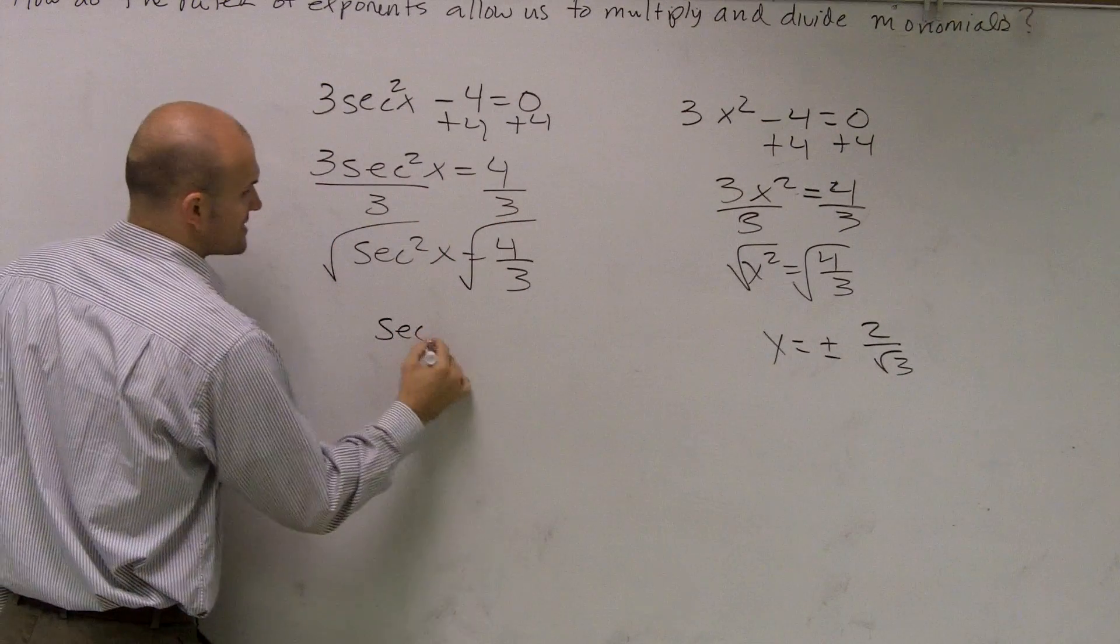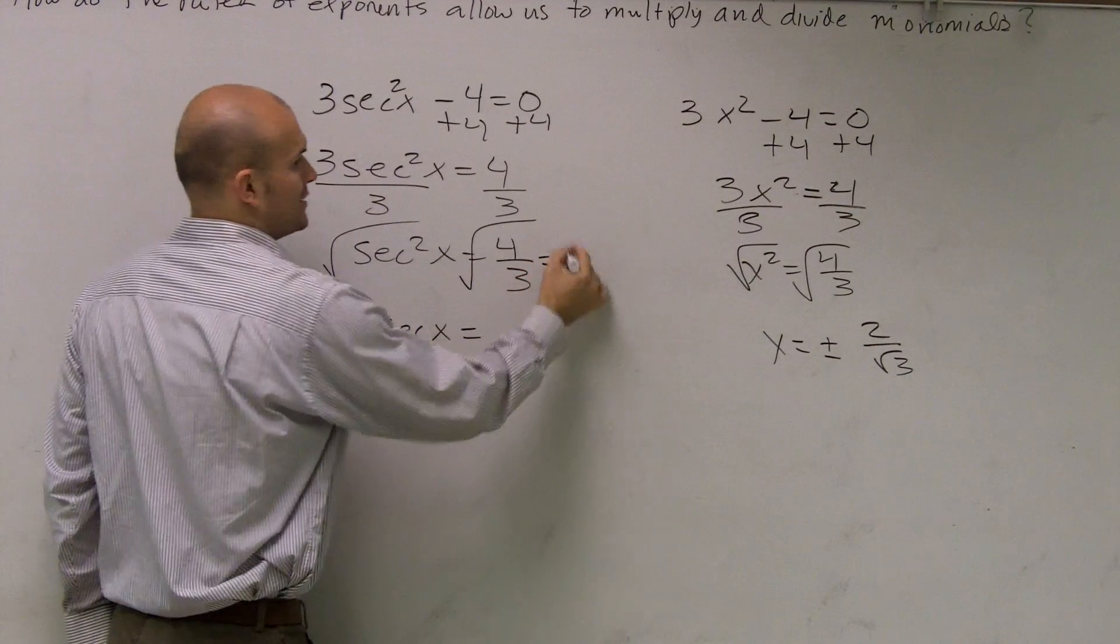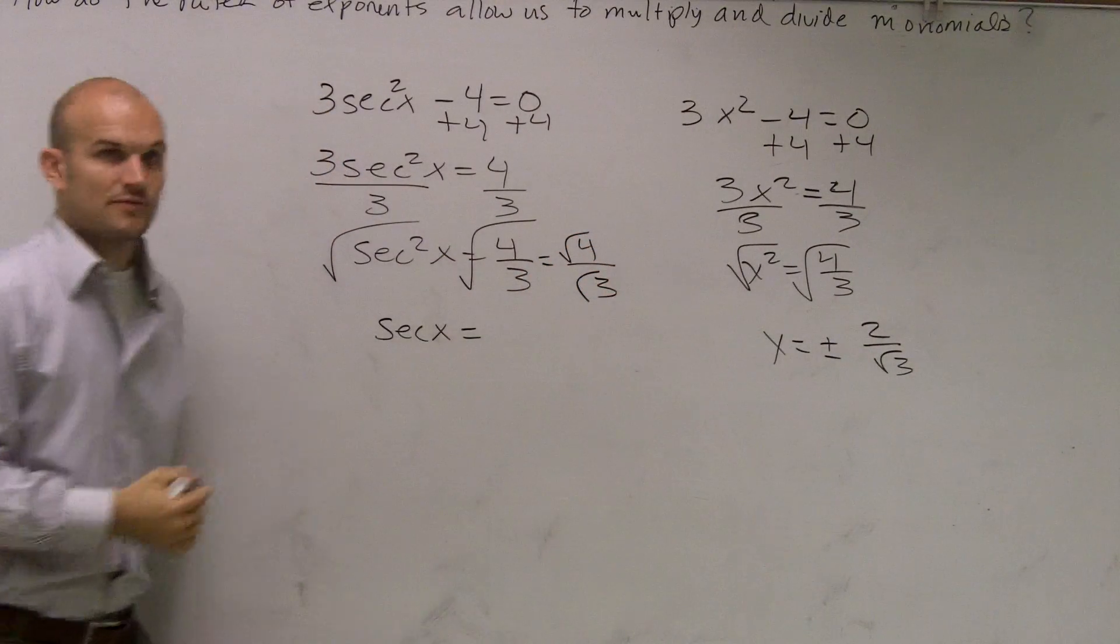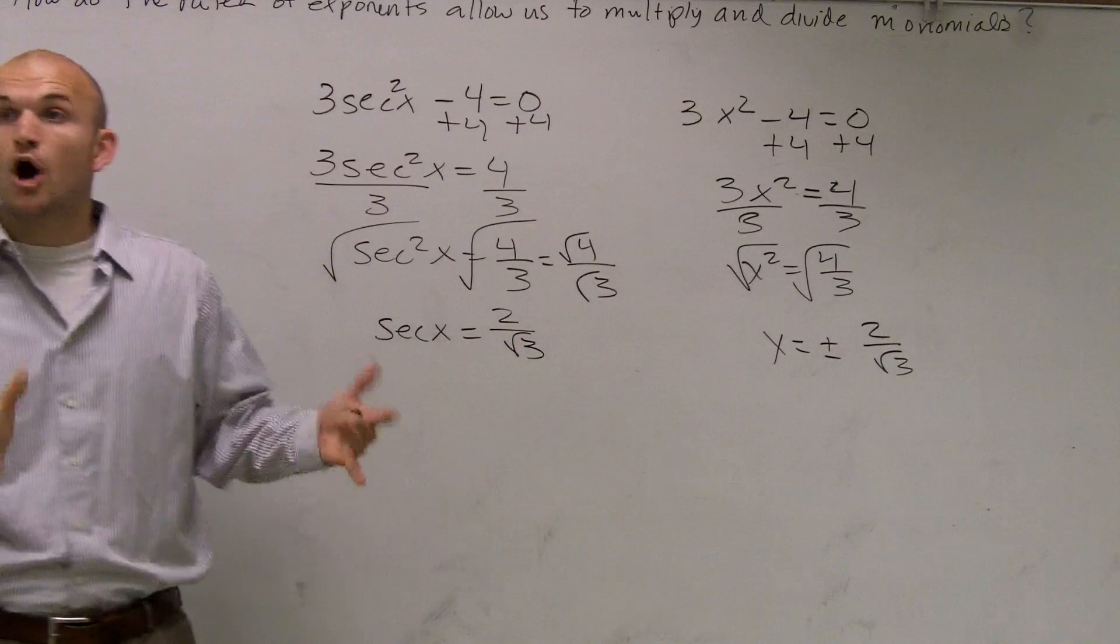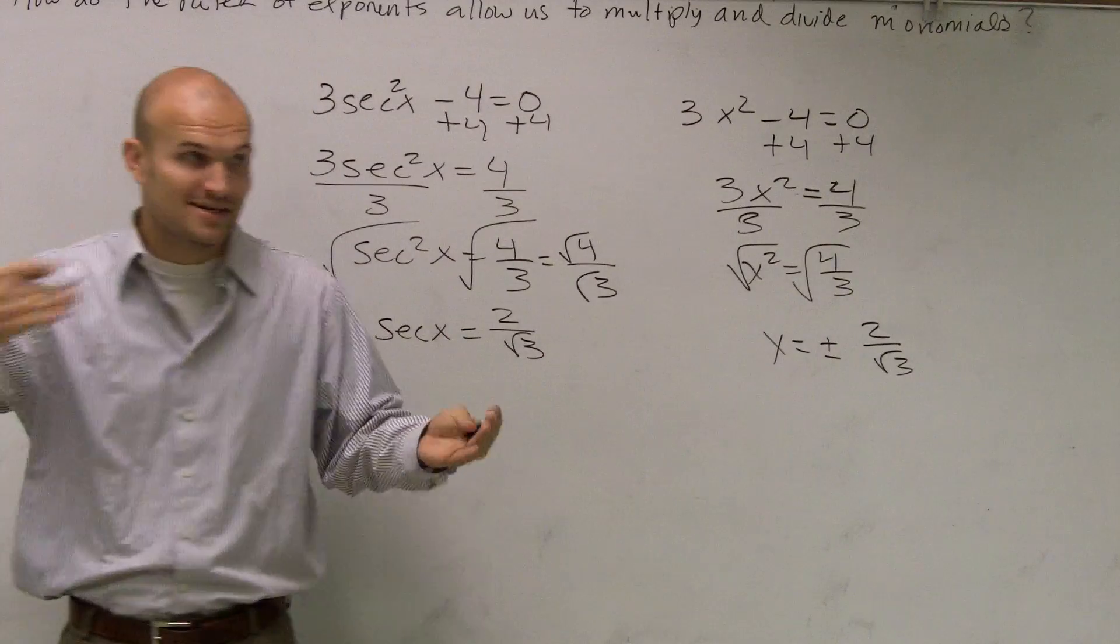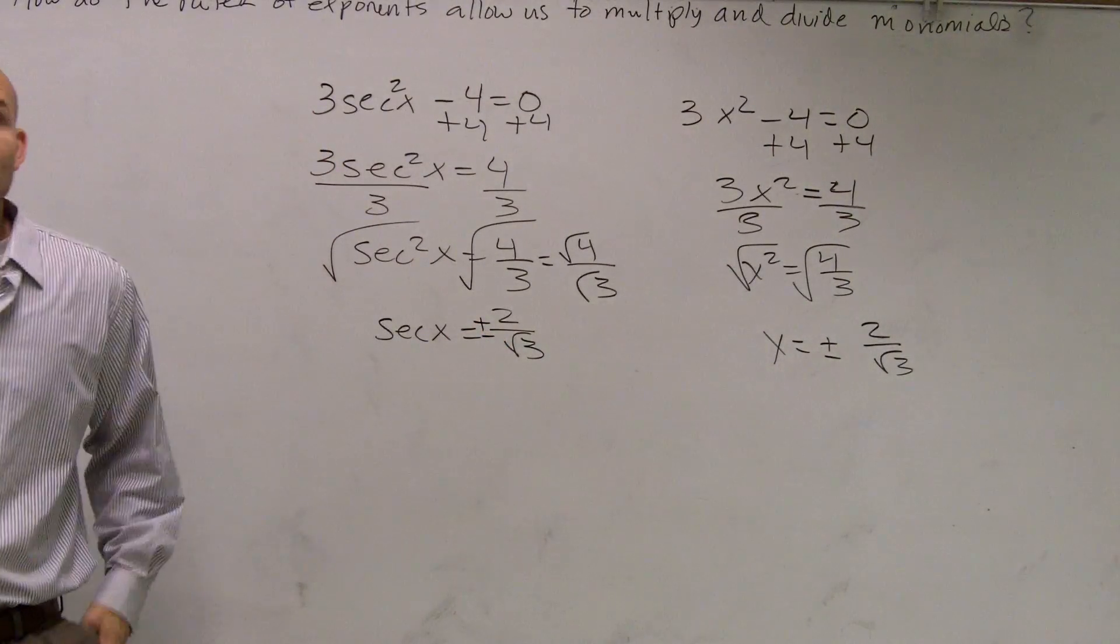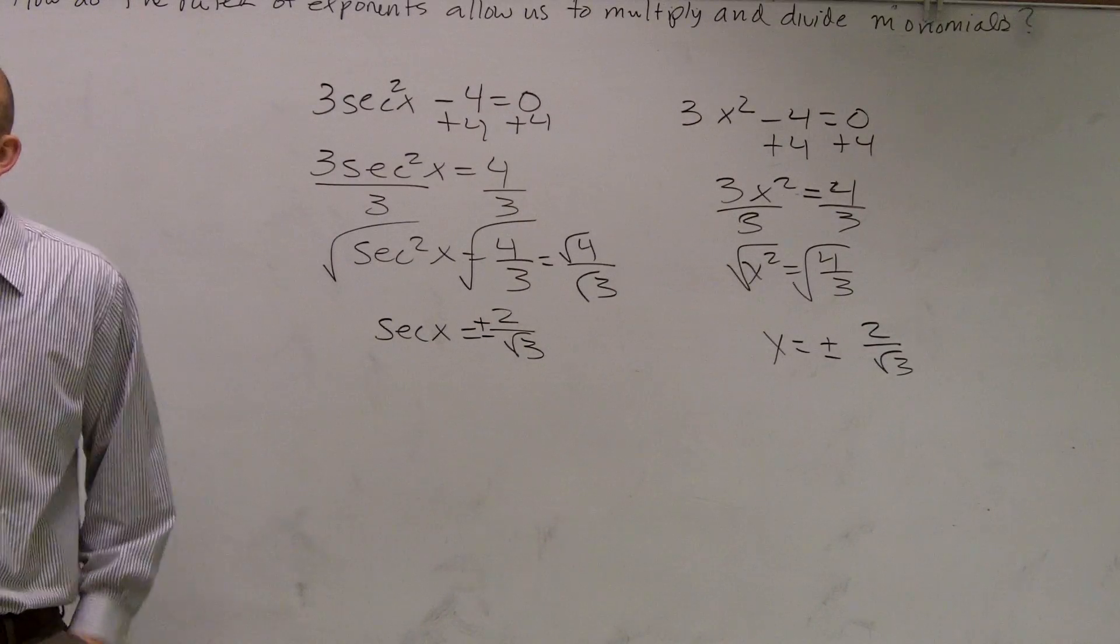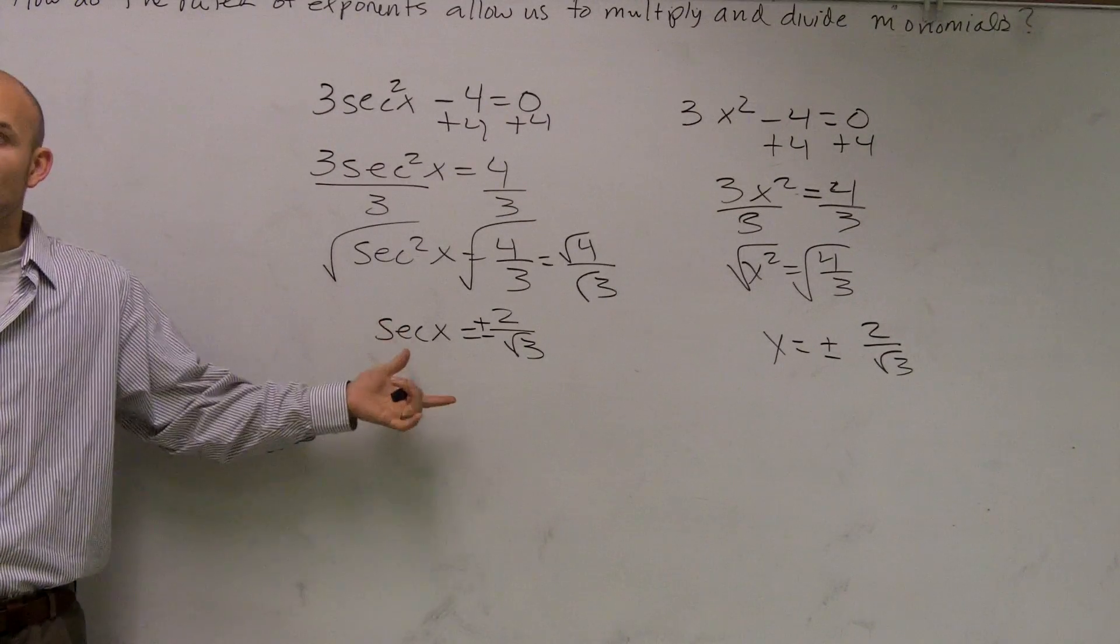So therefore, I get secant of x equals, remember, the square root of 4 over 3 equals the square root of 4 over the square root of 3. So that gives me a 2 over radical 3. Now, a lot of you automatically want to jump into rationalizing the denominator, which is good. That means at least it's been drilled in. Sorry, that's plus or minus, right? That's good. That means it's been drilled into you. But be careful. Remember...